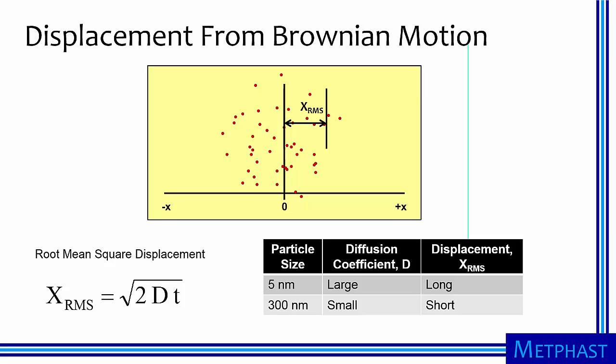Shown in the table at the lower right, a small particle, like a 5 nanometer particle, will have a large diffusion coefficient and therefore a large displacement due to diffusion, whereas a larger particle, say 300 nanometers, will have negligible displacement. If we look at this equation, the more time we give diffusion, the more displacement we'll have.